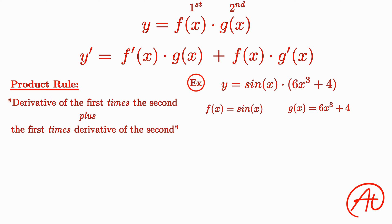Knowing our trigonometry derivatives, we find f prime of x is equal to cosine of x. And again, using the power rule, we find g prime of x equals 18x squared.